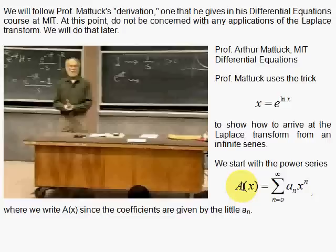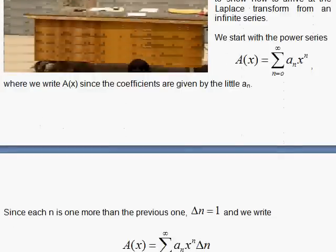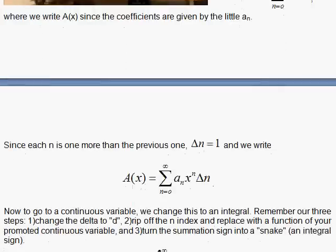We start with the power series, calling the function on the left capital A of x, since we have little a on the right. We'll use a trick in a second where we replace x with e to the natural log of x. Before that, to go to a continuous situation, we set this up where delta n is 1 — since we go n equals 0, 1, 2, 3, the change in n is 1, as these are non-negative integers in sequence.